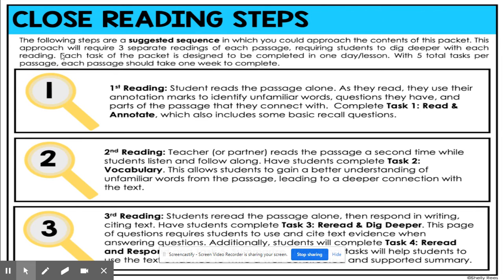This approach will require three separate readings — so in total, you're reading it three times. It will require you to dig deeper with each reading. Each task of the packet is designed to be completed in one day. You will have five total tasks per passage, and each passage should take one week to complete. Today we're focusing on Ruby Bridges.